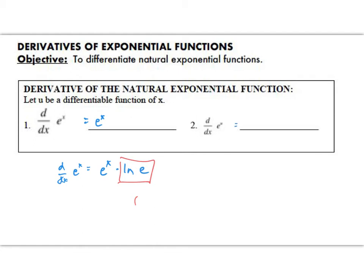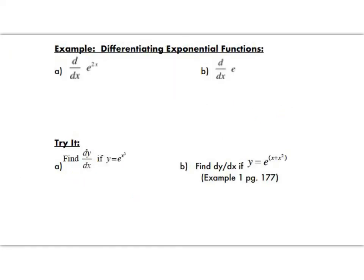Now if you got the chain rule at work here, then it's going to be e to the u times u prime just like we know already. Let's take a look at some examples. If I've got e to the 2x here, then the derivative of that thing is just going to be e to the 2x times 2. The only thing you can really do here is maybe put that 2 out in front so it looks like it makes a little bit more mathematical sense.